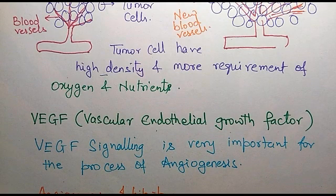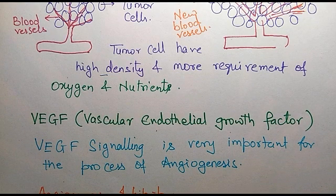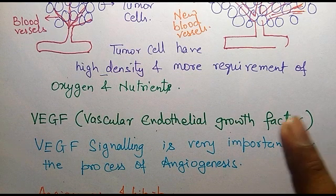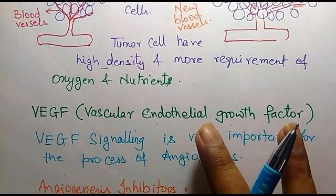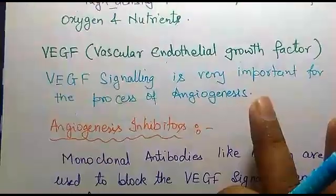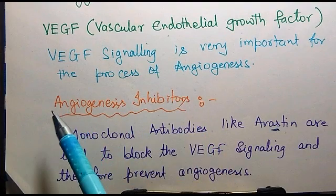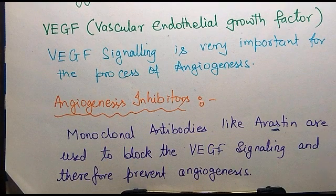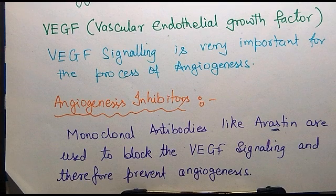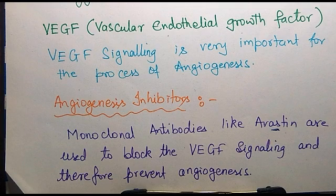It has long been proposed that angiogenesis in tumours can be stopped if we can block this VEGF signaling loop. Angiogenesis inhibitors such as the monoclonal antibody Avastin have been developed, which are used to block VEGF signaling and thereby prevent the process of angiogenesis. That is it for today — thank you, students.